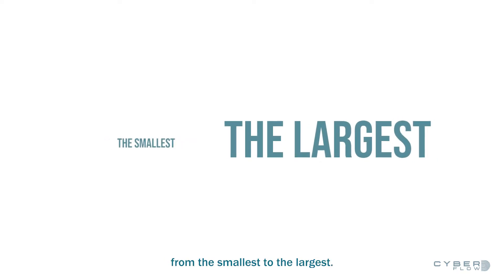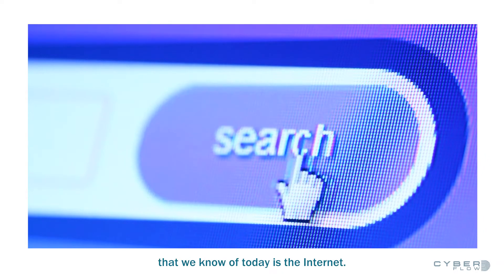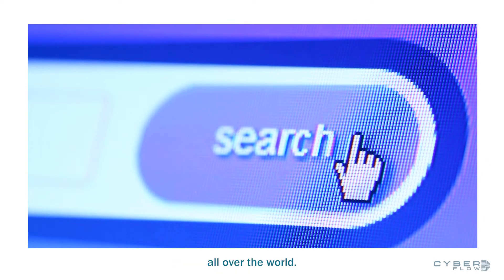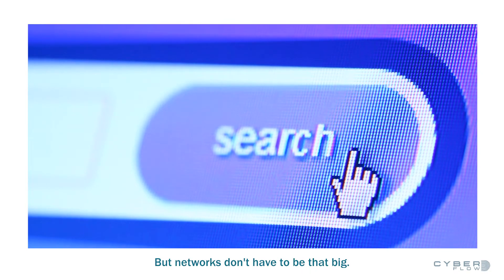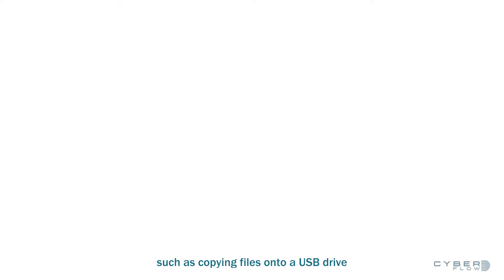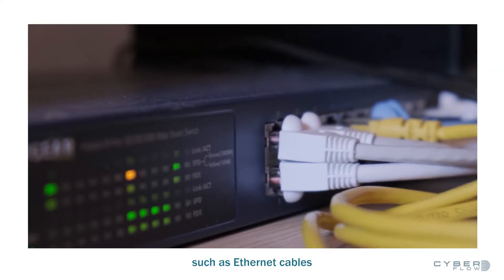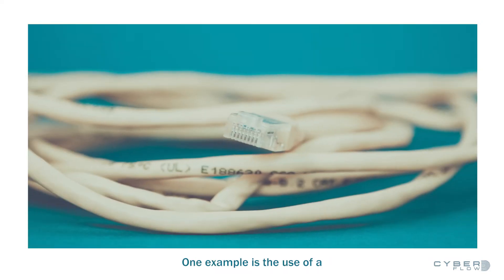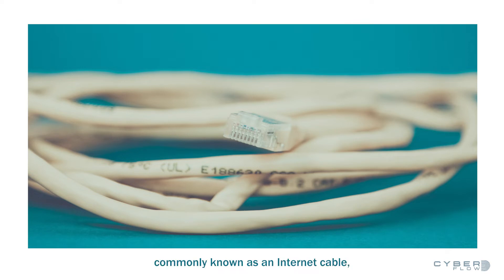Networks come in all different sizes, from the smallest to the largest. The largest network on Earth that we know of today is the Internet — it connects people and devices all over the world. But networks don't have to be that big; they can be as simple as connecting two computers together. In the past, to share information between two computers, you would need to use a physical method such as copying files onto a USB drive and transferring it manually. Nowadays, networks typically use cables, such as Ethernet cables, to connect devices. One example is the use of an RJ45 connector, commonly known as an Ethernet cable, which connects devices through a physical connection.